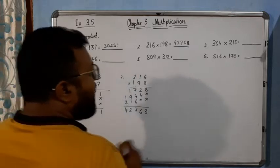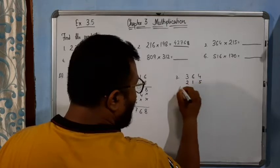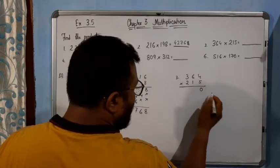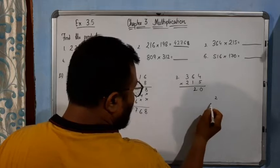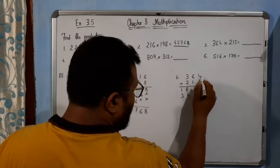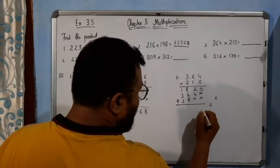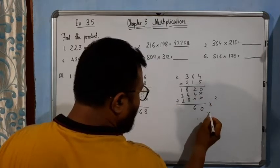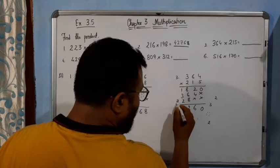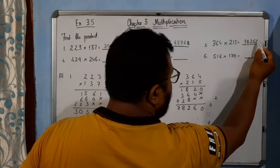Now the third one: 364 multiplied by 215. 5 times 4 is 20, write 0 carry 2. 5 times 6 is 30, 32. Write 2, carry 3. 5 times 3 is 15, 18. Cross. Then 1 times 4 is 4, 1 times 6 is 6, 1 times 3 is 3. Double cross. 2 times 4 is 8, 2 times 6 is 12, write 2 carry 1. 2 times 3 is 6, 7. Adding: 0, 6, 8, 2, 7. So the answer is 78260.